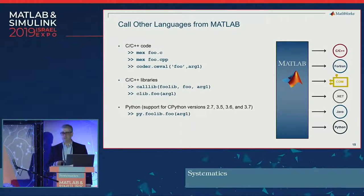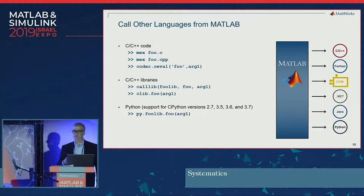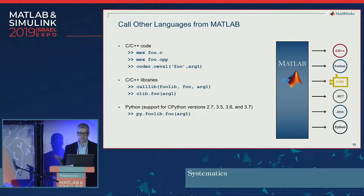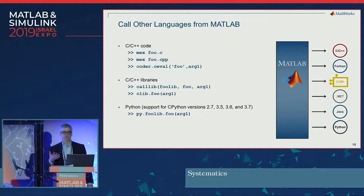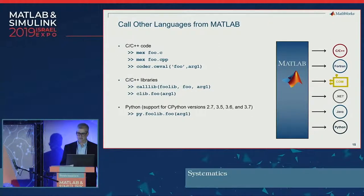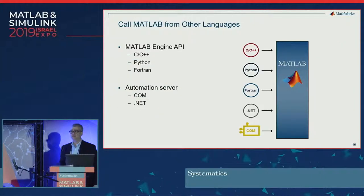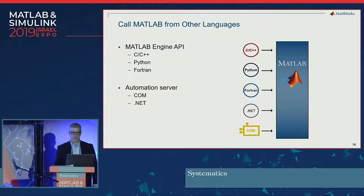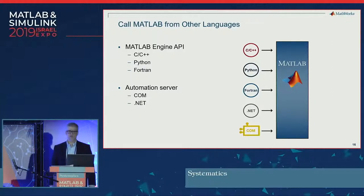For C/C++ libraries, you're probably familiar with our loadlibrary or calllib functions. We also have a new interface for C++, which is the clib interface — this allows you to use C++ in MATLAB, introduced within the last couple of releases. And as mentioned, with the Python interface you'd use py.foolib to access a library and call functions. You can also call MATLAB from other languages using the MATLAB Engine API for C, C++, Python, and Fortran, as well as automation servers for COM or .NET.